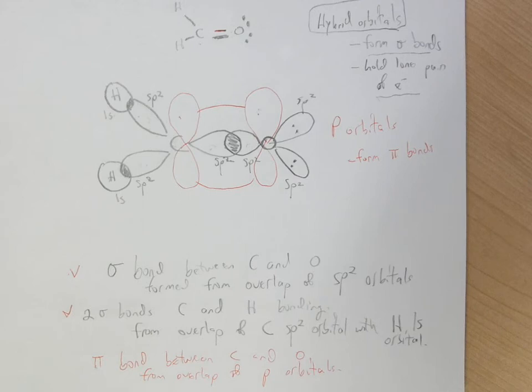And so that's our picture of how formaldehyde is put together from the overlap of different orbitals to form the bonds, and then the hybrids can hold the lone pairs.